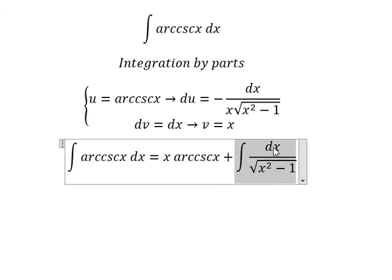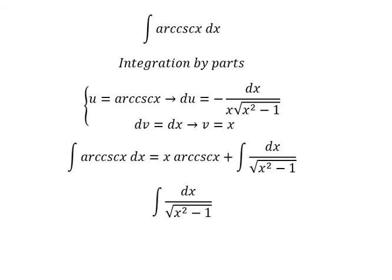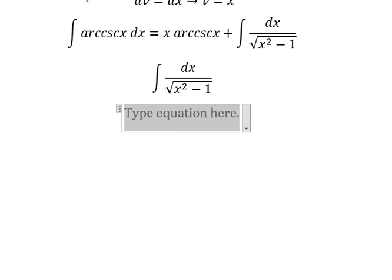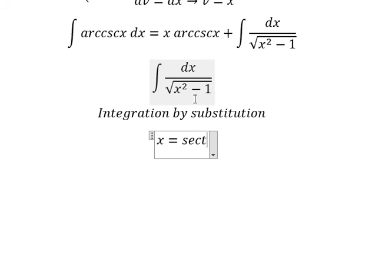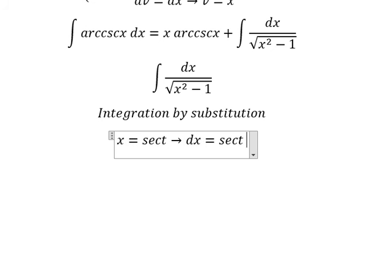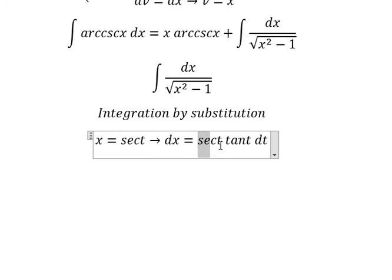Now I will focus on this remaining integral. We can use integration by substitution. I will put x equals to secant of t. Substituting gives us secant squared of t minus one, which we change to tan squared t. Simplifying the square root, and dx becomes secant of t times tan t dt.